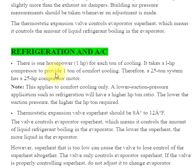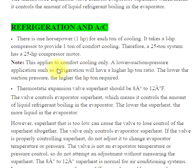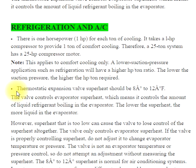Refrigeration and AC: there is 1 horsepower for each ton of cooling. It takes a 1 HP compressor to provide 1 ton of comfort cooling. Therefore, a 25-ton system has a 25 HP compressor or motor. Note, this applies to comfort cooling only. A lower suction pressure application such as refrigeration will have a higher HP-to-ton ratio — the lower the suction pressure, the higher the HP per ton required.